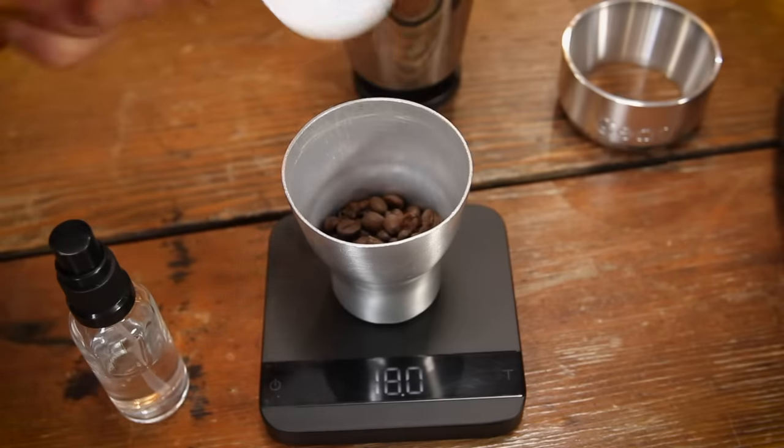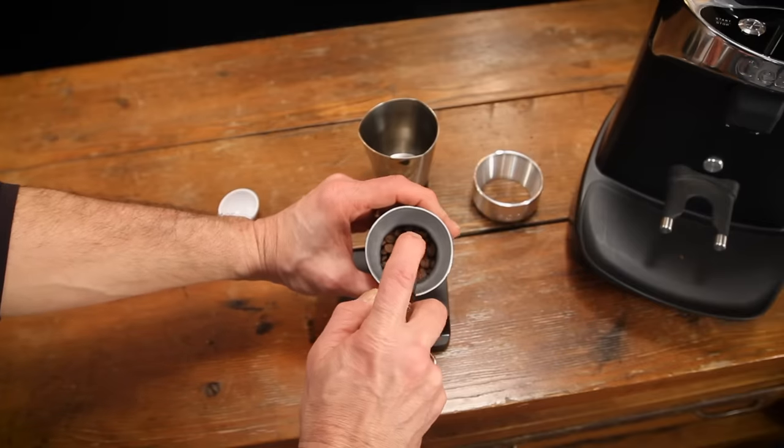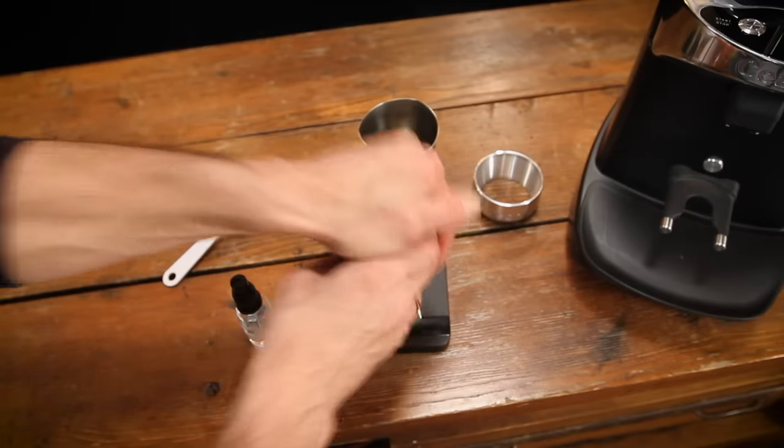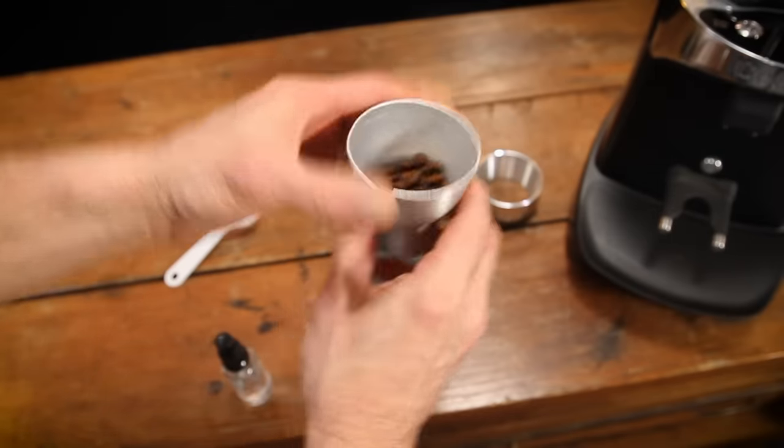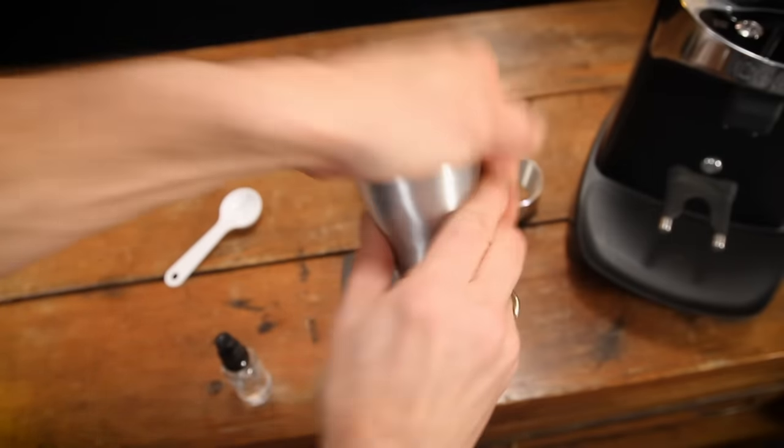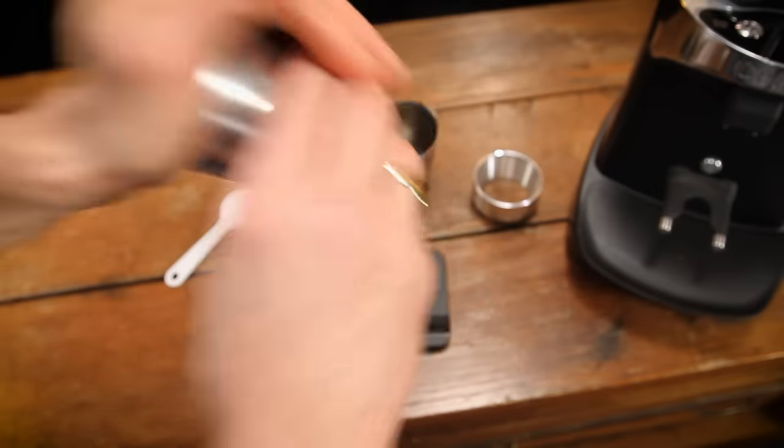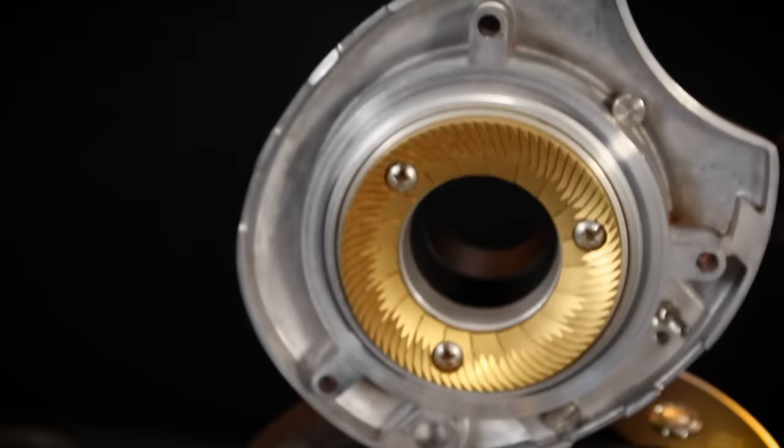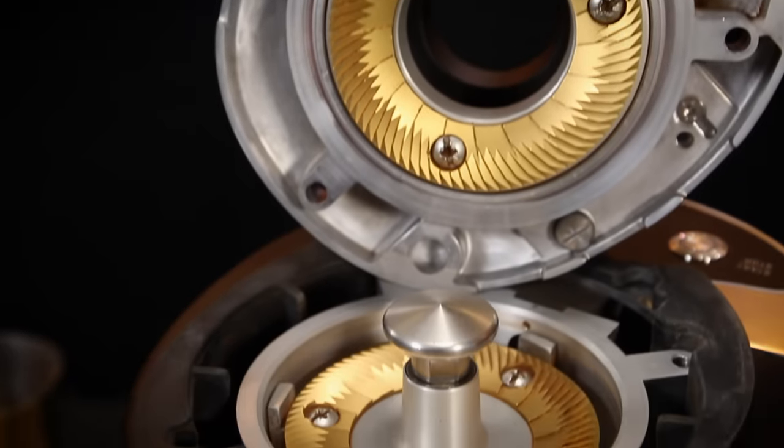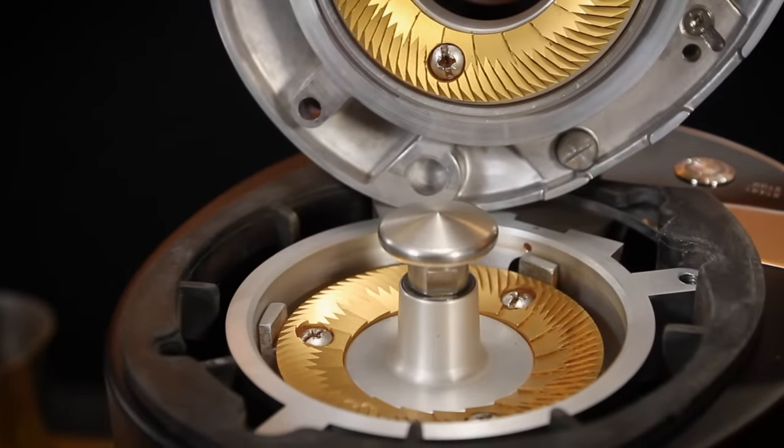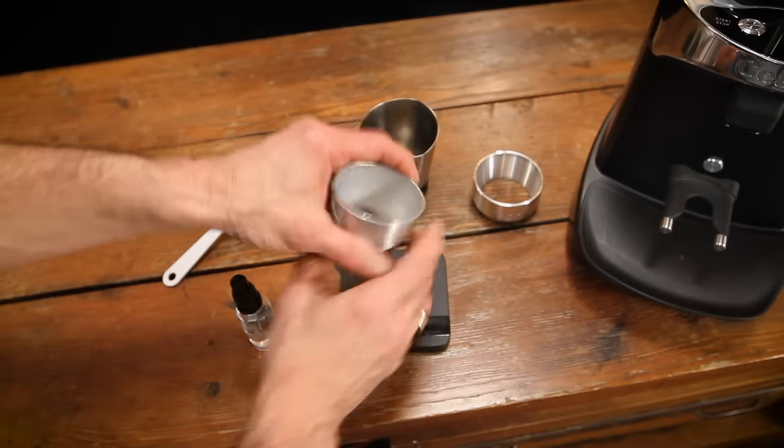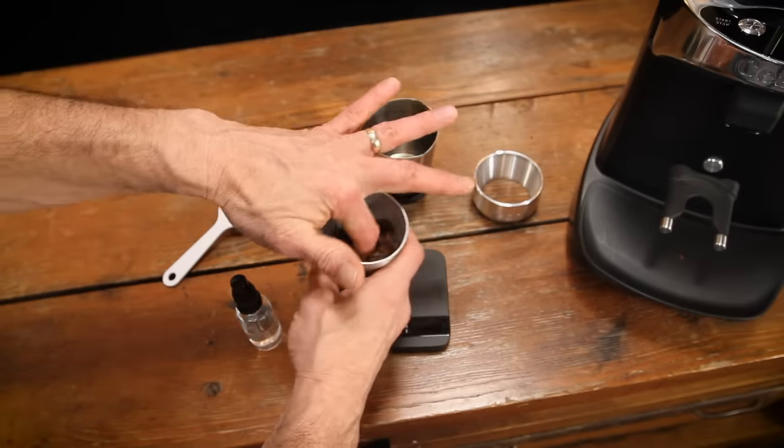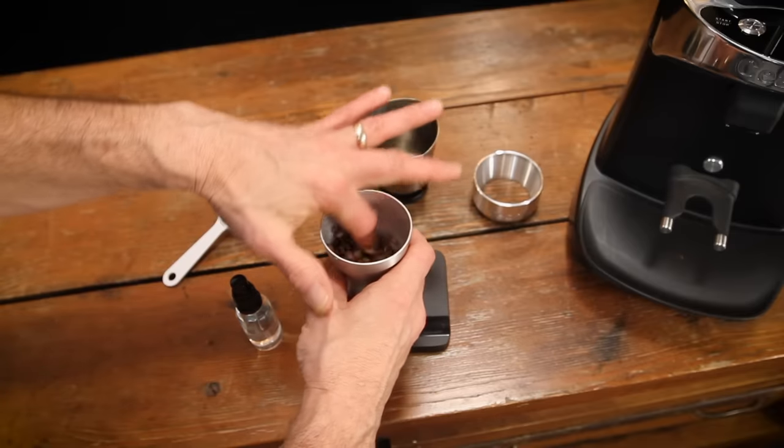Typically you'd weigh out your beans into a cup then use the RDT sprayer to mist them with water. If not familiar, RDT stands for the Ross Droplet Technique. It's a common method used to control and stop static buildup when grinding. Now you can RDT with any grinder but do be aware there is the possibility of corrosion when using RDT in a steel burr grinder. With titanium burrs in the E37 SD that's no concern. While steel can rust, titanium does not.